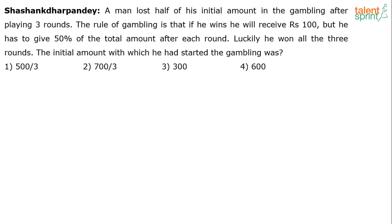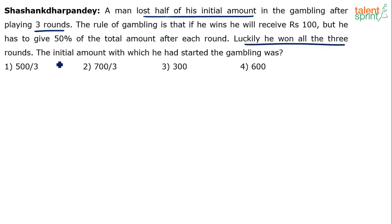This is an interesting problem. It says a man has lost half of his initial amount in gambling after playing three rounds. He won all three rounds, yet still lost money. Why is that? How can you lose money when you have won all three rounds?